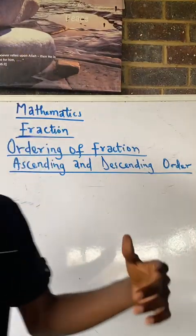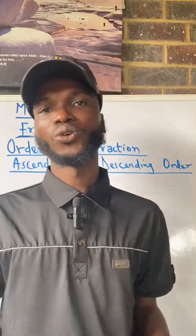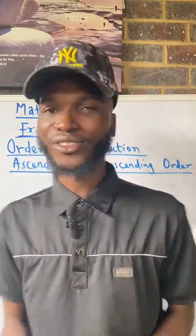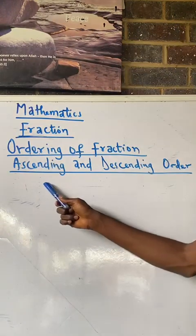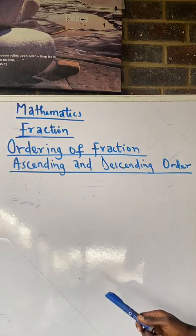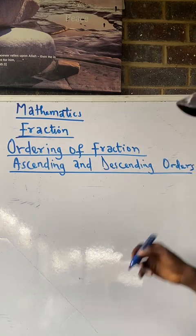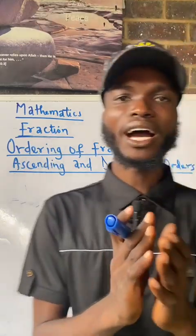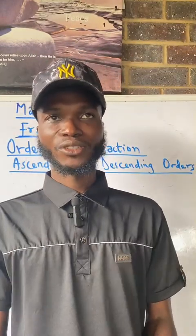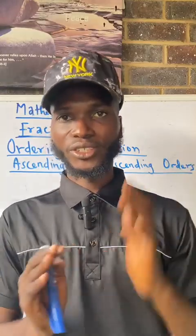So what do we mean by ordering of fraction? That's arranging fraction. So how can we arrange fraction? We have two kinds of arrangement. We have ascending order and we have descending order. Ascending means you are ranging from the smallest to the biggest. So you are coming from small to big.